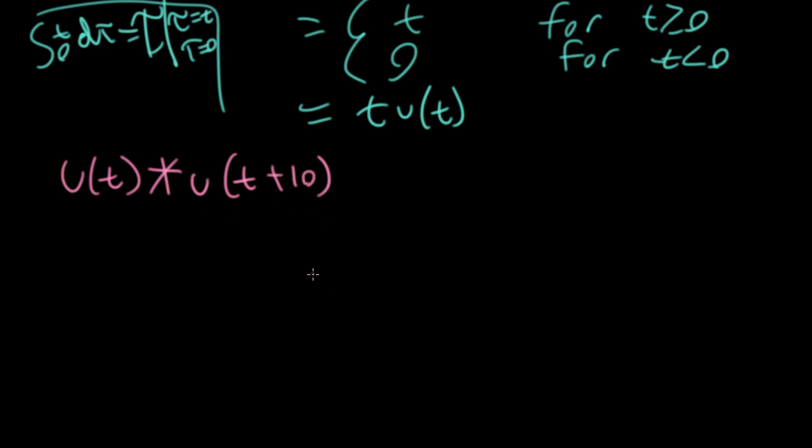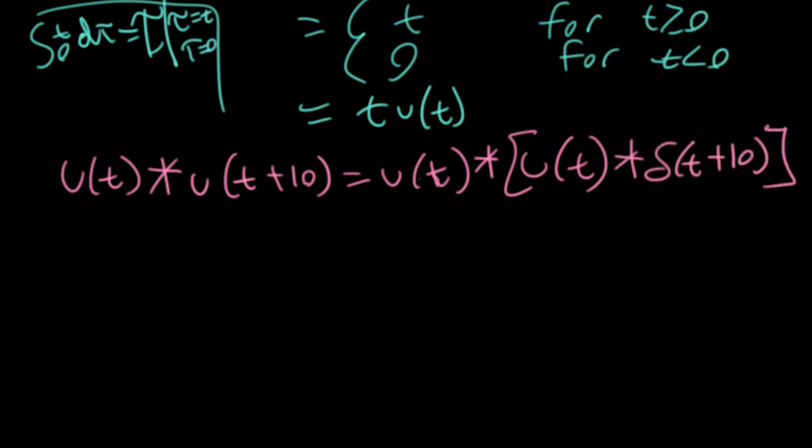So suppose I had u(t) and I were to convolve that with u(t+10). So this is a u shifted to the left. You could go through all this complicated thinking about it, or think about it like this. Well, what is u(t+10)? Well, it's like u(t) convolved with delta(t+10), because we know this corresponds with the shift. So these two things are equivalent.